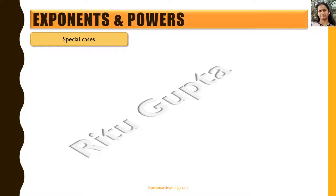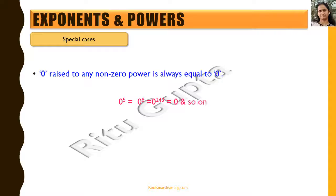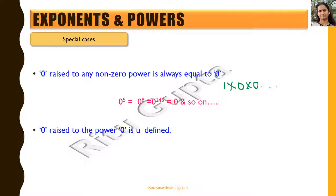Let's take some special cases for exponents and powers. The first special case: 0 raised to any non-zero power is always equal to 0, because we multiply 1 by 0 that many times, resulting in 0. The second special case is 0 raised to the power 0, which is undefined — it is not defined as equal to 1. So 0 raised to the power 0 is undefined.